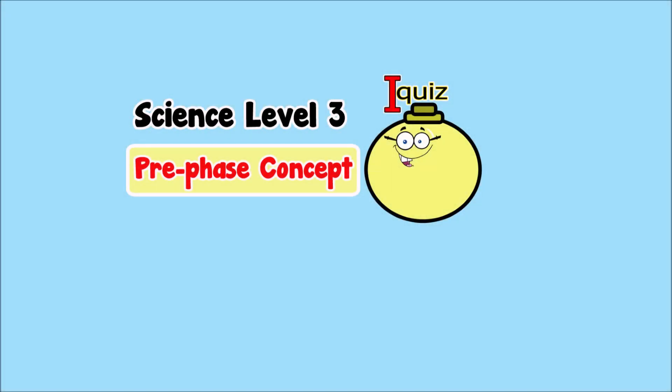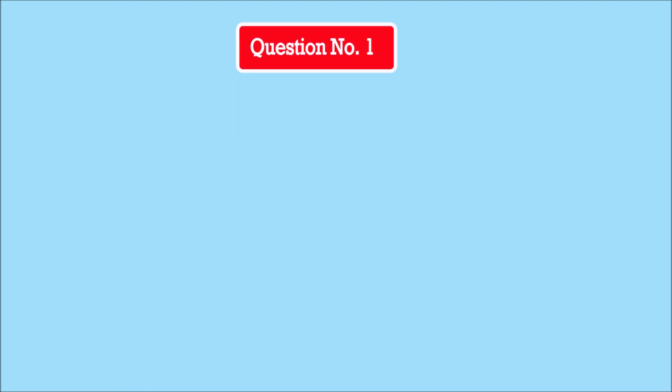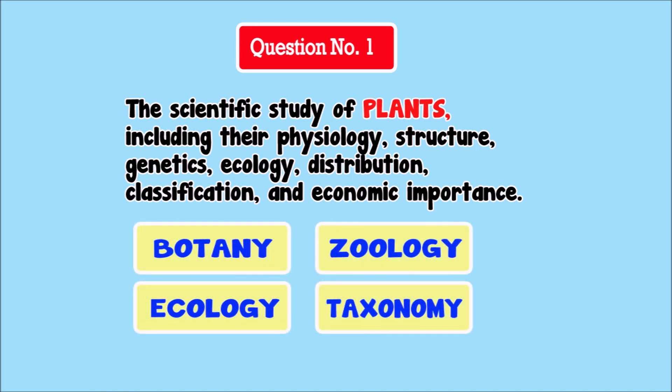Science Level 3 Pre-Phase Concept, Question Number 1. The scientific study of plants including their physiology, structure, genetics, ecology, distribution, classification, and economic importance. Answer choices: Botany, Zoology, Ecology, Taxonomy.